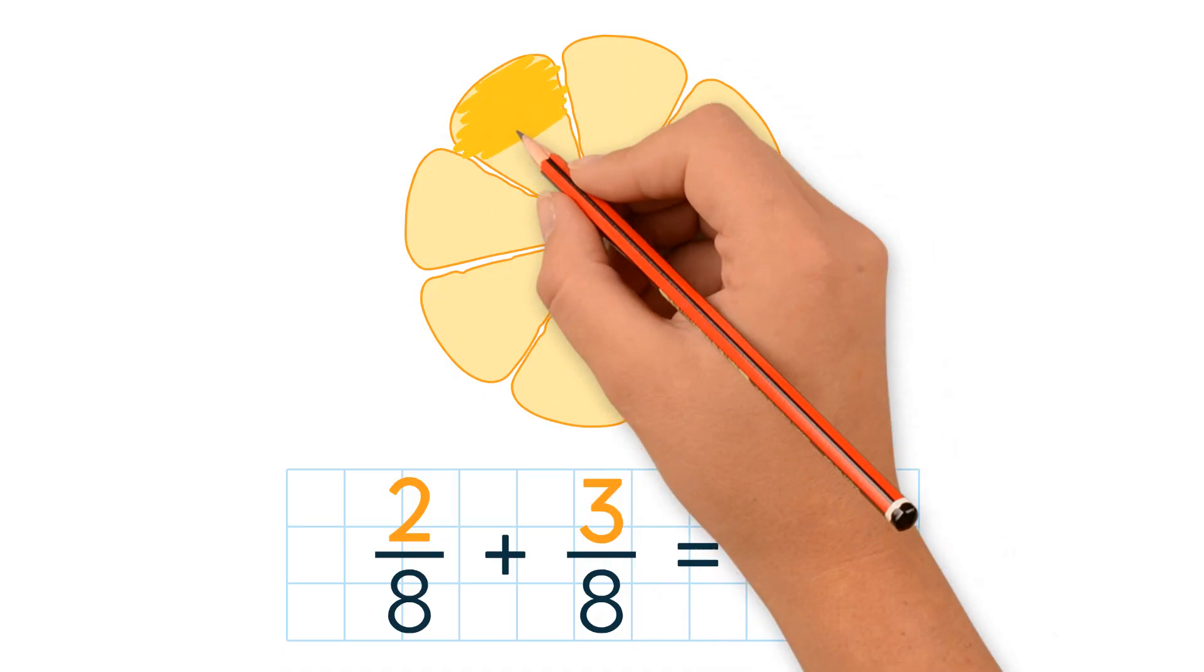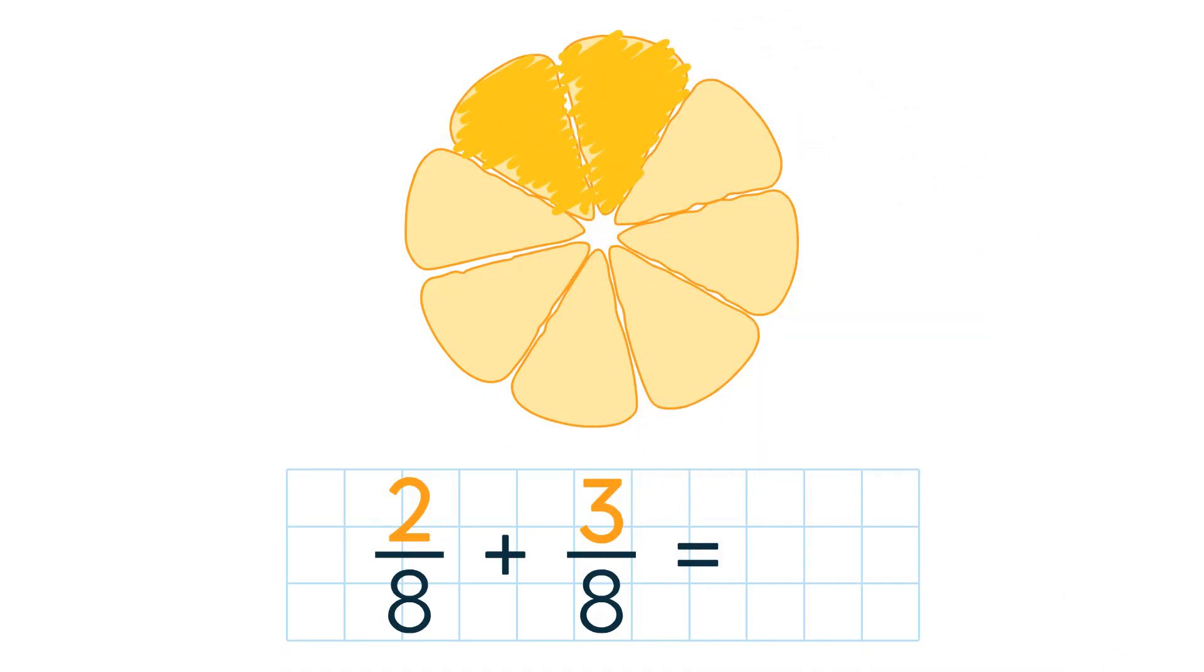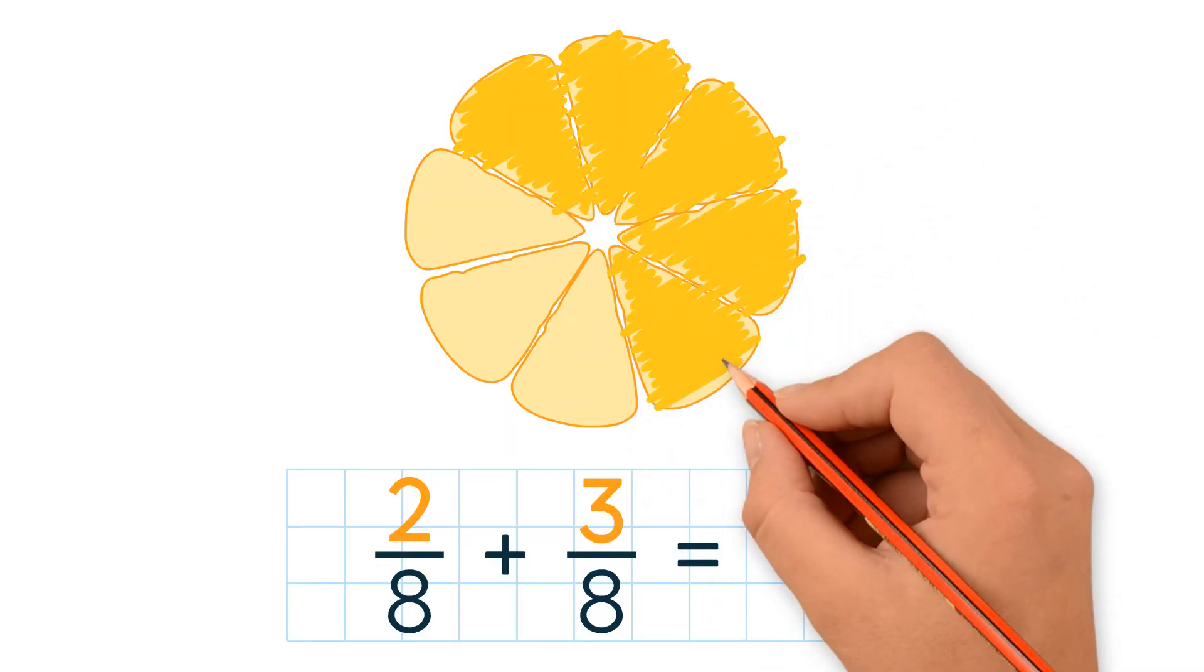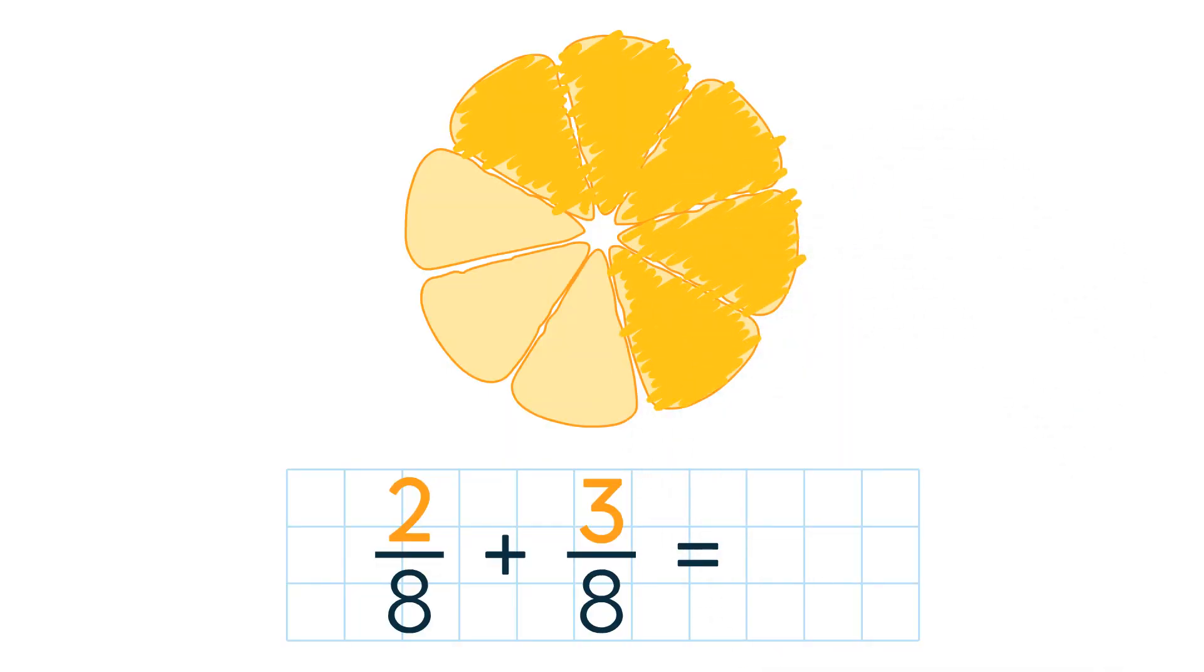First we shade in 2 pieces. Then we shade in 3 more. Now count the pieces that we shaded in. 5. So the answer is 5 eighths.